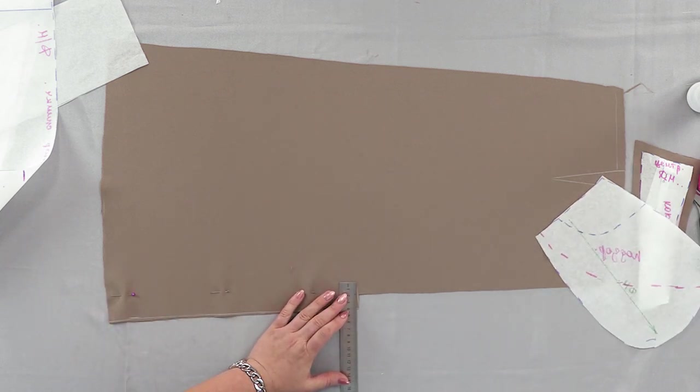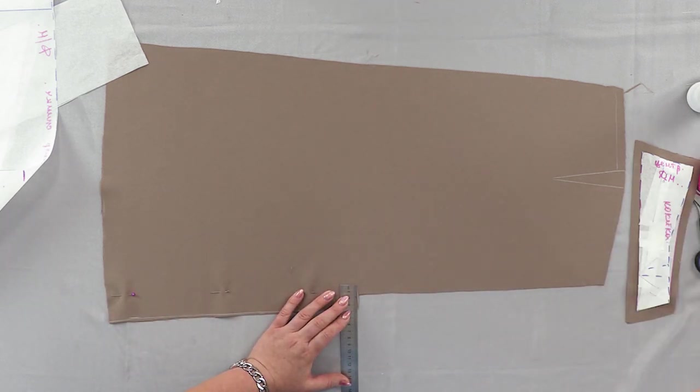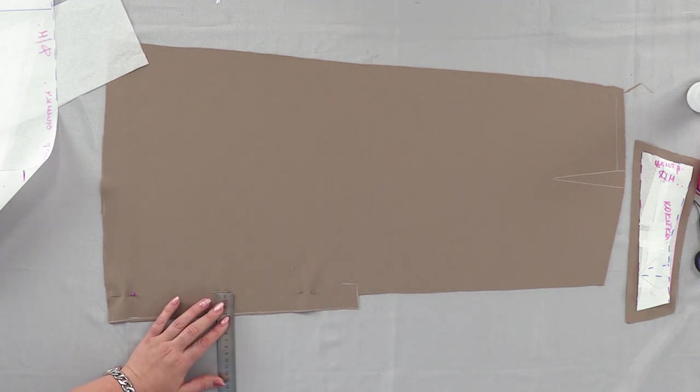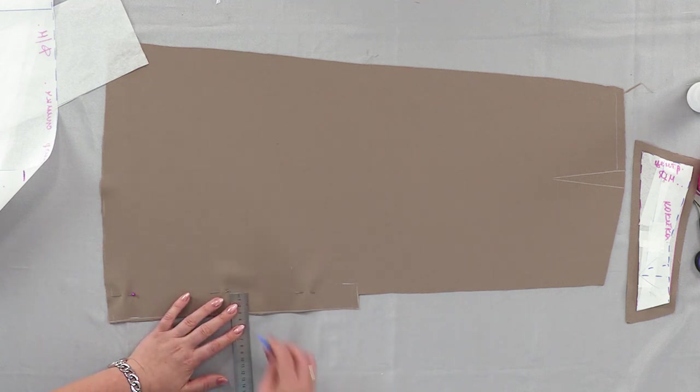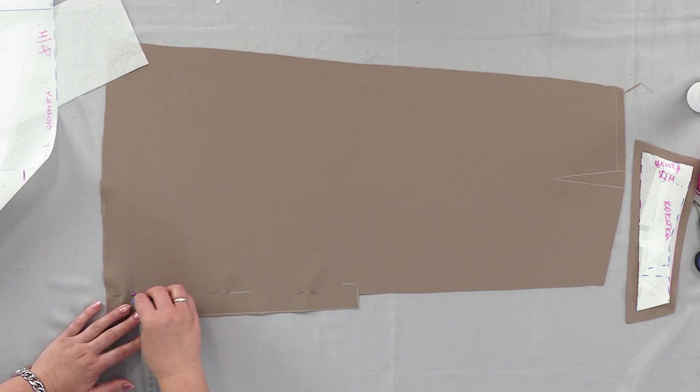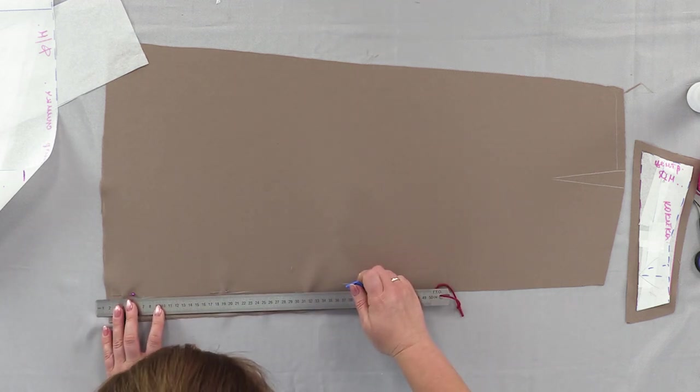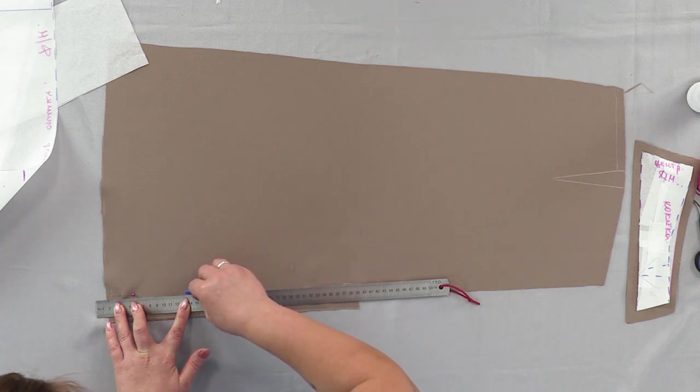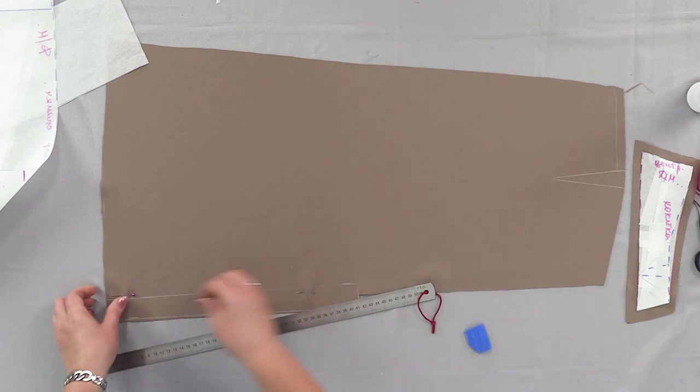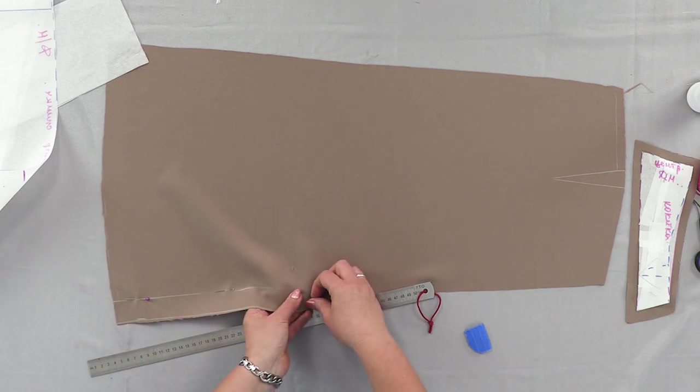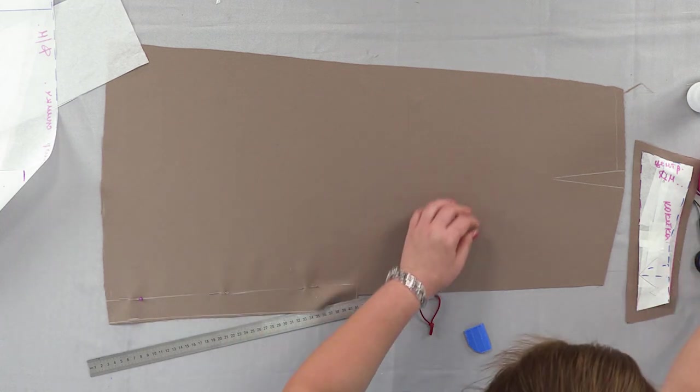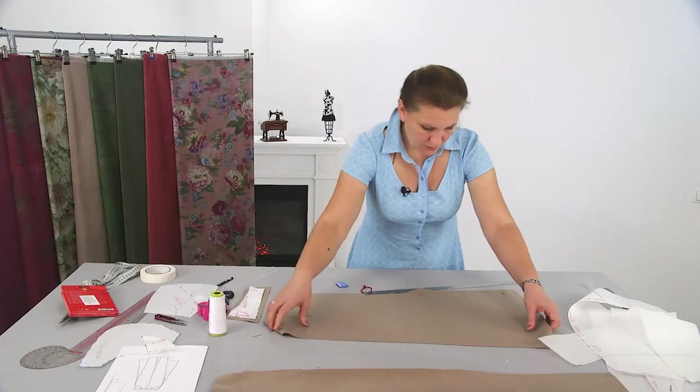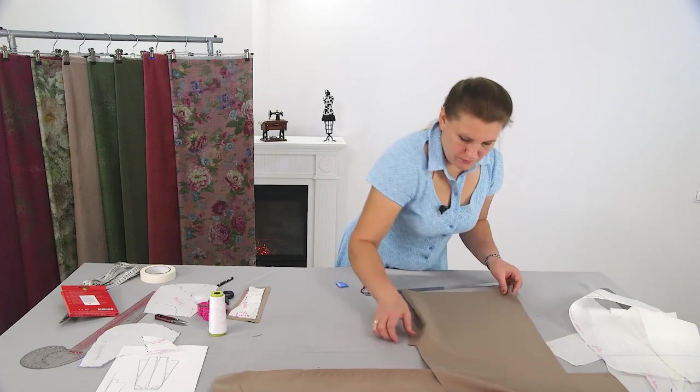So let's mark it right now. We have a 1.5 centimeter fringe in the middle. If we want to know on which side do we glue the seam.